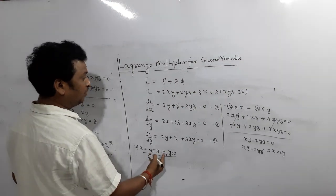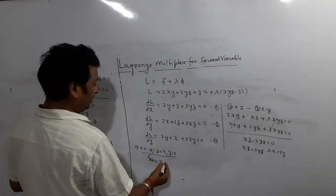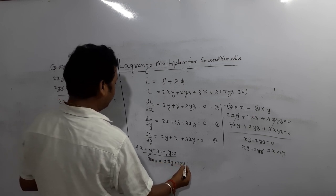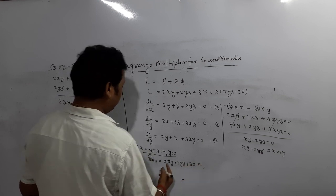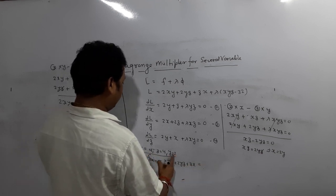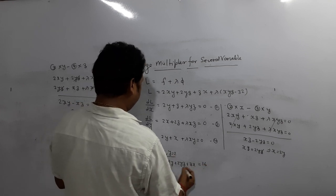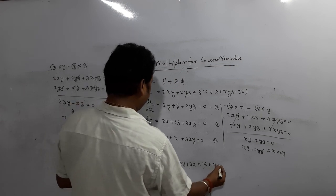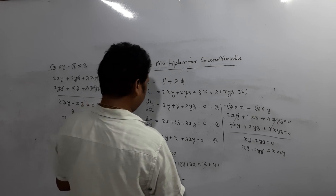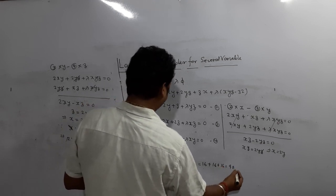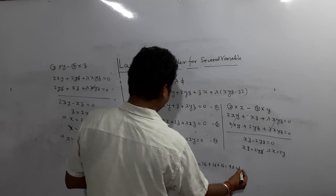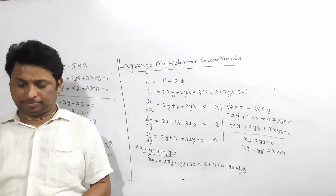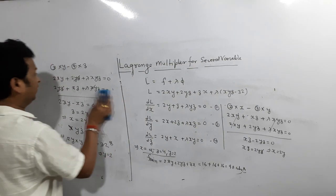Now we calculate the minimum surface area. f minimum = 2xy + 2yz + zx. Substituting: 2(4)(4) + 2(4)(2) + (2)(4) = 32 + 16 + 8 = 48. Wait, let me recount: 2xy = 2(4)(4) = 32 is... actually the minimum value works out to 48 square units. This is the answer.